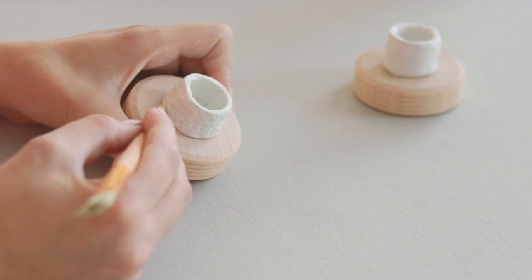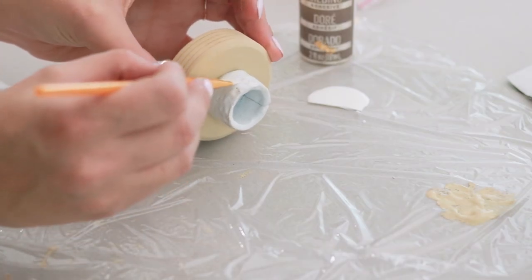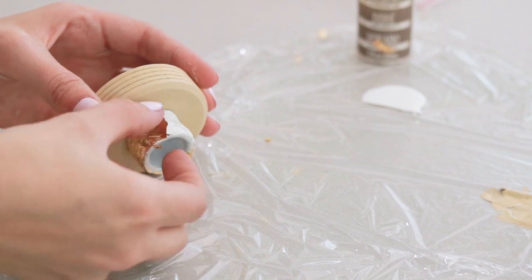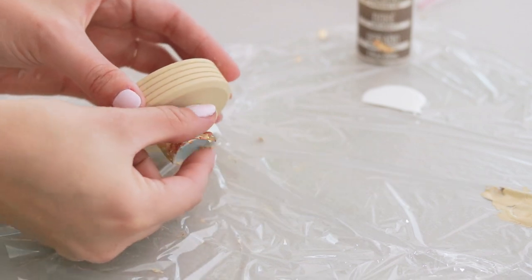To give it a gold hammered look, I just applied some gilding adhesive and gold leaf, and this gave me a pretty metallic hammered finish.